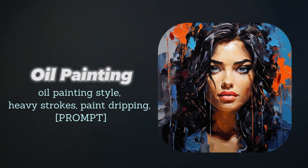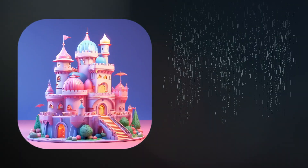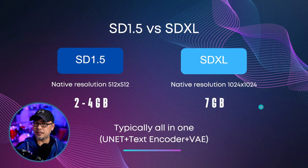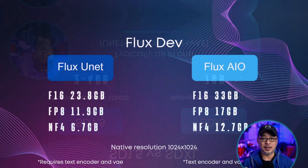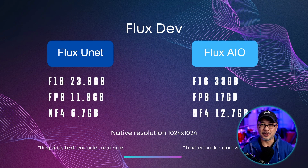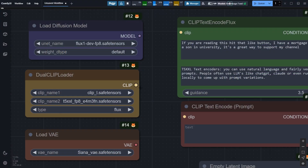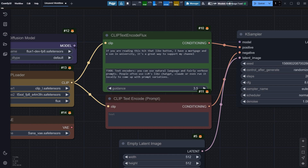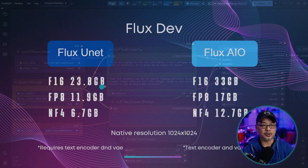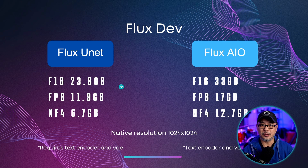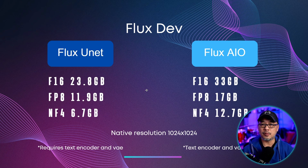The file size for SD 1.5 was between 2 to 4 gigabytes depending on certain fine-tuned models, and then the jump to SDXL was practically double or triple in some cases in terms of file size. In the days of SDXL, models were a lot more simple. But with the introduction of Flux, things started to get more complicated — it would come as just the unit model, meaning you had to load the text encoder and the VAE separately. Originally the F16 version came out at a whopping 24 gigabytes. Eventually an FP8 and NF4 version were introduced, and just like SDXL, eventually some all-in-one models were introduced as well.